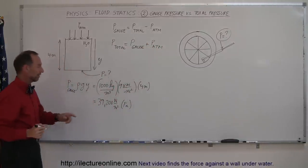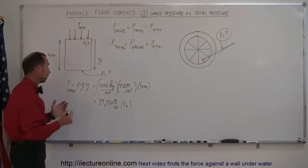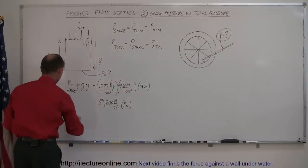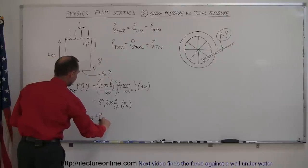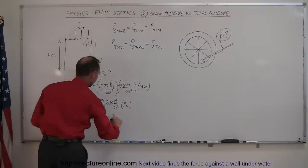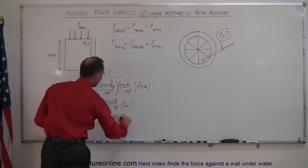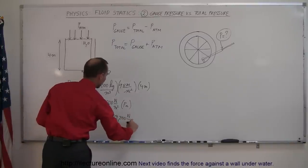So, if we're going to find the total pressure here, we have to add atmospheric pressure to this. Therefore, P total is equal to P gauge plus the atmospheric pressure, so that's equal to 39,200 newtons per meter squared plus 101,300 newtons per meter squared.